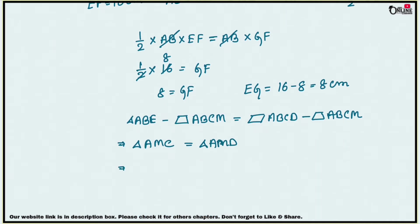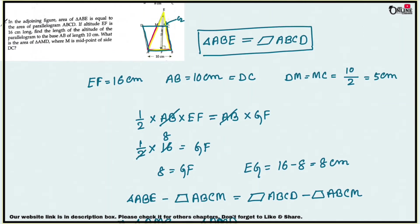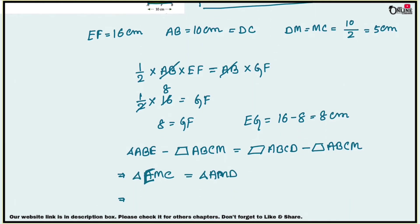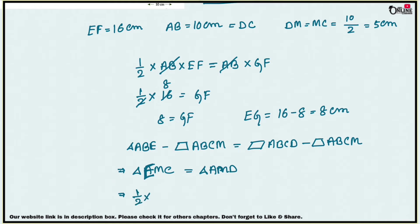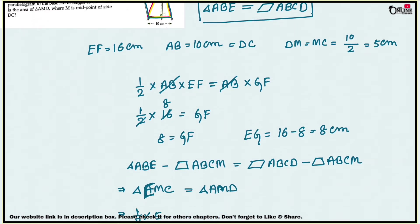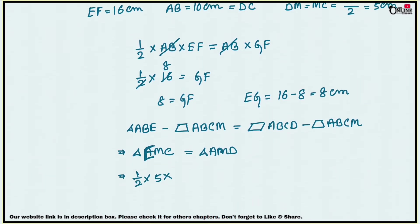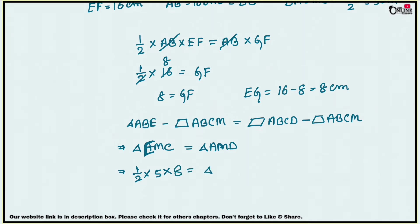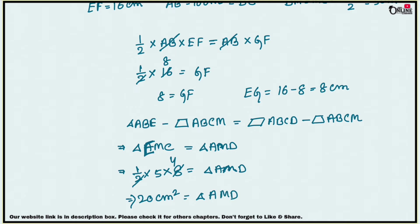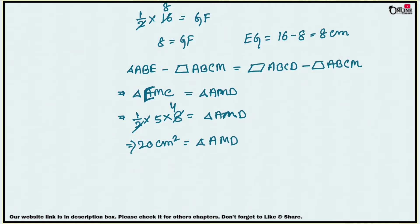For triangle EMC: MC is the base, which is 5 centimeters, and EG is the height, which is 8 centimeters. So the area is half times 5 times 8, which equals 20 centimeter square. Therefore the area of triangle AMD is also 20 centimeter square.